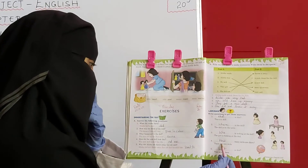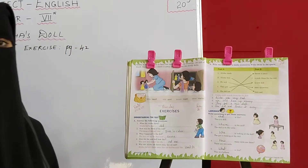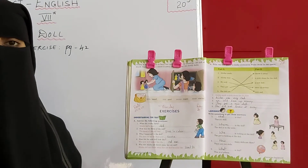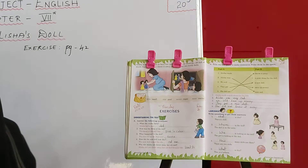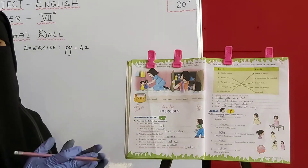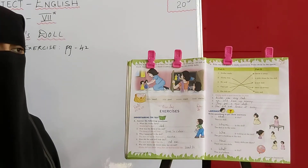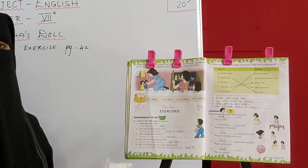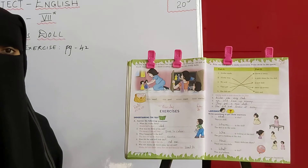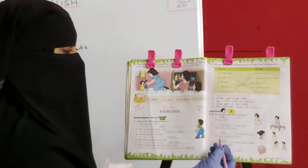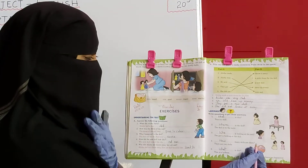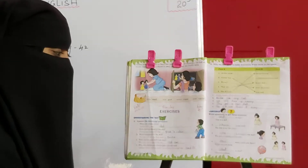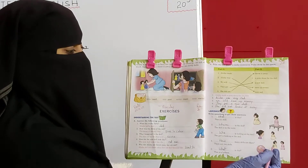Now next one: There are two dolls. Okay, yahaan pe kya bol rahe hain? Wahaan two dolls hain. There are two dolls. Toh iska question kya bolenge hum? Wahaan kitne dolls hain? Toh answer aayega: wahaan two dolls hain. Toh English question kya banayenge? How many dolls are there? Wahaan kitne dolls hain? Toh answer aayega: There are two dolls.